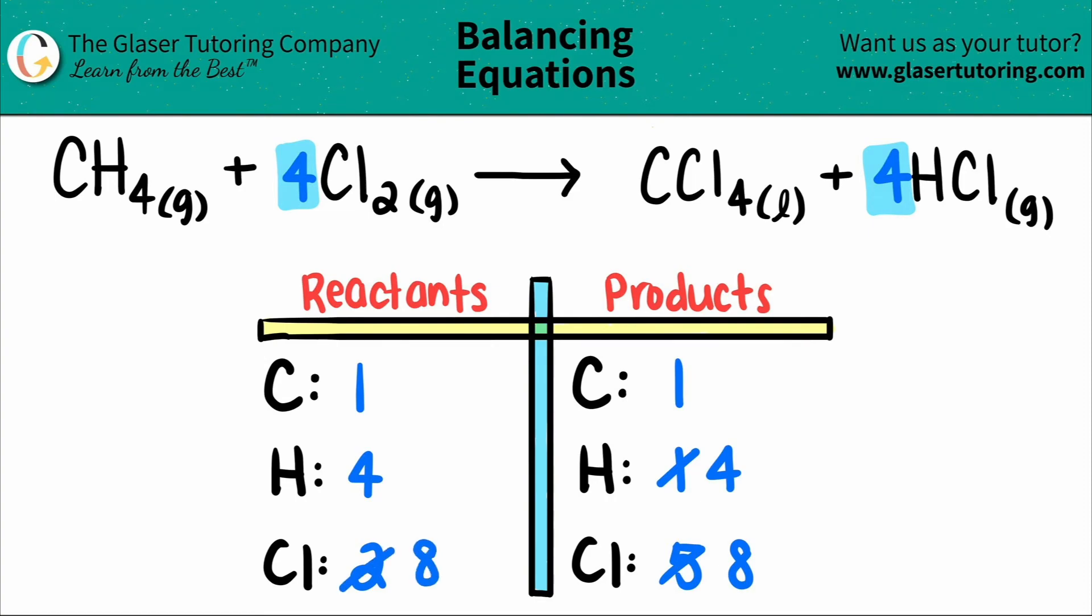And look at that, guys. Everything is balanced. So the balanced equation is that you have one CH4 plus four Cl2s, which will give us one CCl4 and four HCls. And that's it.